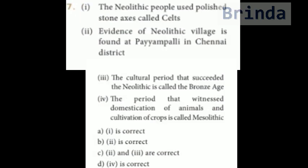Seventh question: Statement 1 — the Neolithic people used polished stone axes called Silks. Statement 2 — evidence of a Neolithic village is found at Paiyampalli in Chennai district. Statement 3 — the cultural period that succeeded the Neolithic is called the Bronze Age. Statement 4 — the period that witnessed domestication of animals and cultivation of crops is called Mesolithic. Options: first correct; second correct; second and third correct; fourth correct. The answer is A — first is correct. The Neolithic people used polished stone axes called Silks.